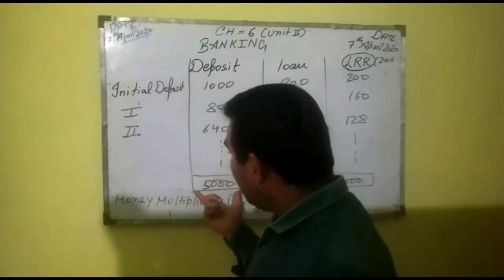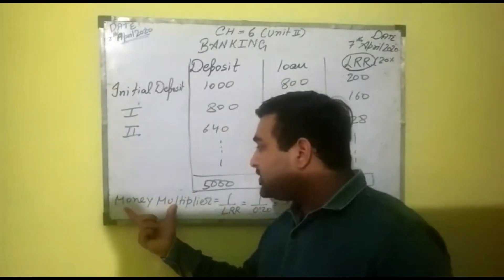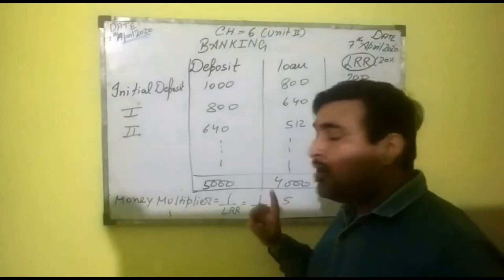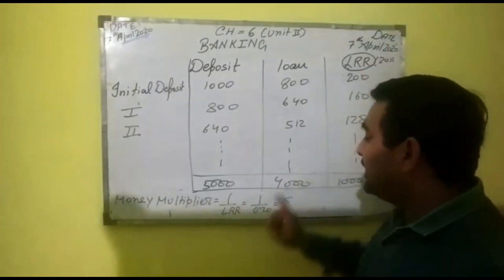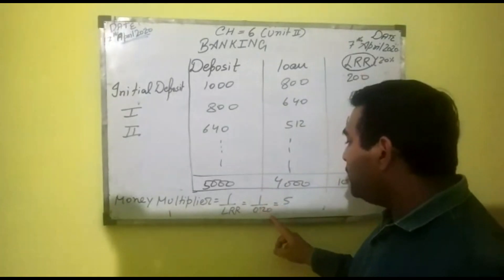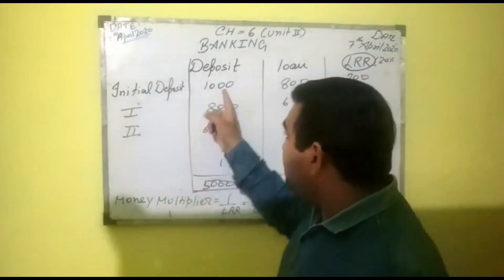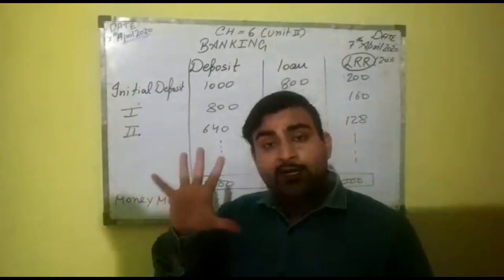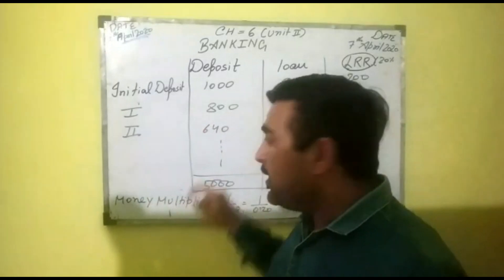This is the concept of money multiplier, which is 1 divided by LRR. 1 upon LRR means if LRR is 20%, that is 0.20, then 1 divided by 0.20 equals 5. It means the initial deposit will create how many times more deposit? 5 times. So 1000 multiplied by 5 equals 5,000.